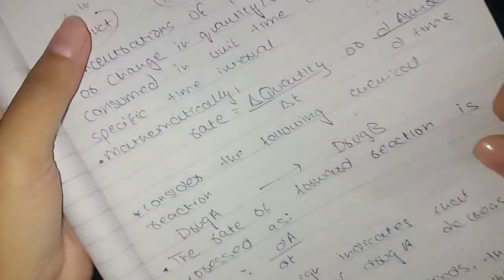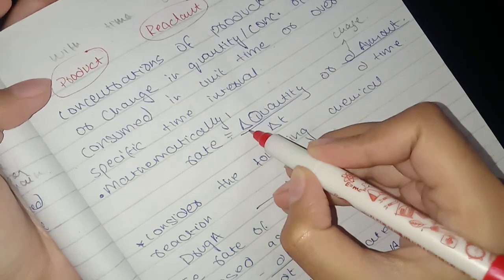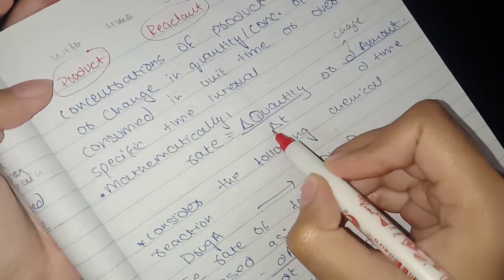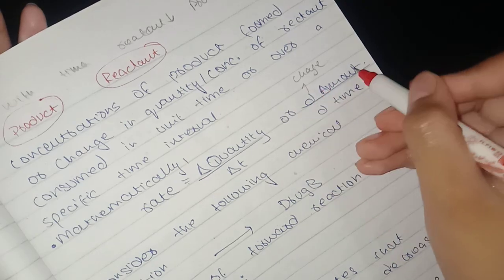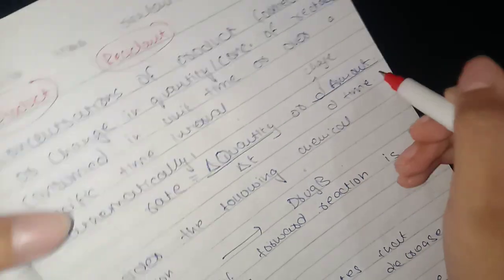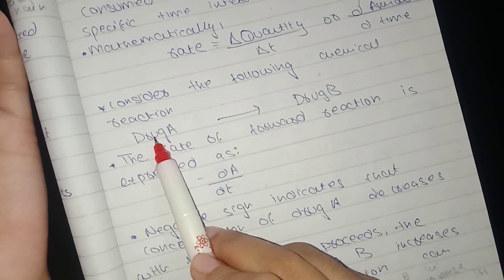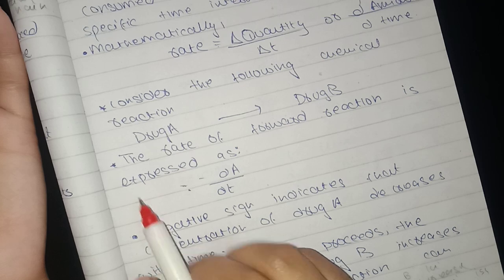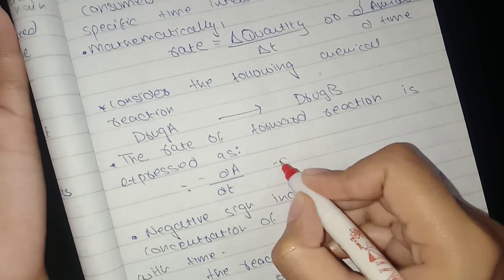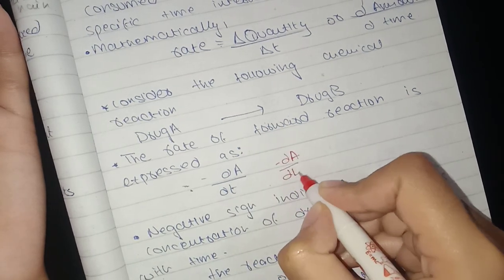We represent rate of reaction as change in quantity divided by change in time, or change in amount divided by change of time. For drug A converting to drug B, if we go forward reaction, we represent this as minus dA by dt.